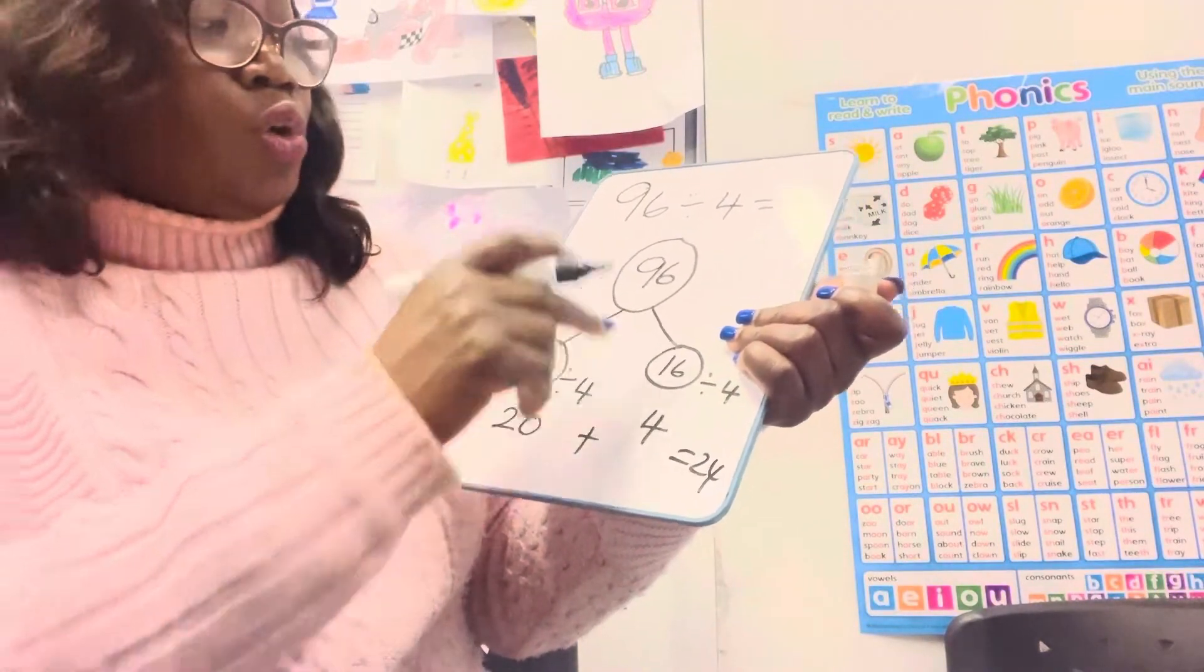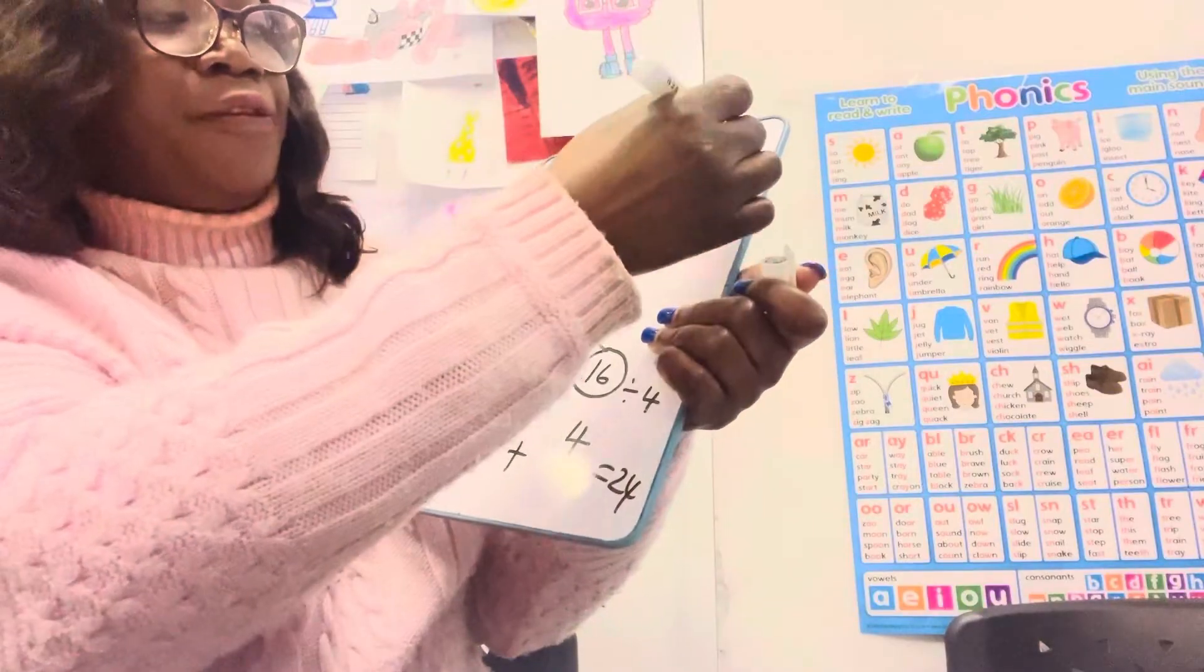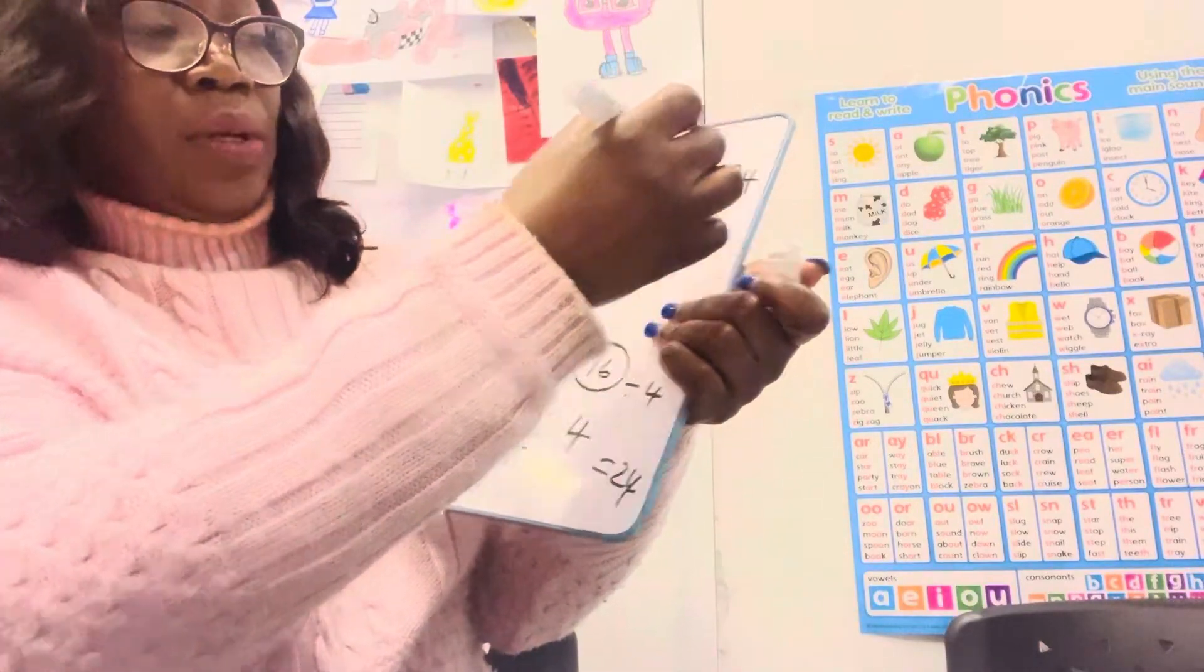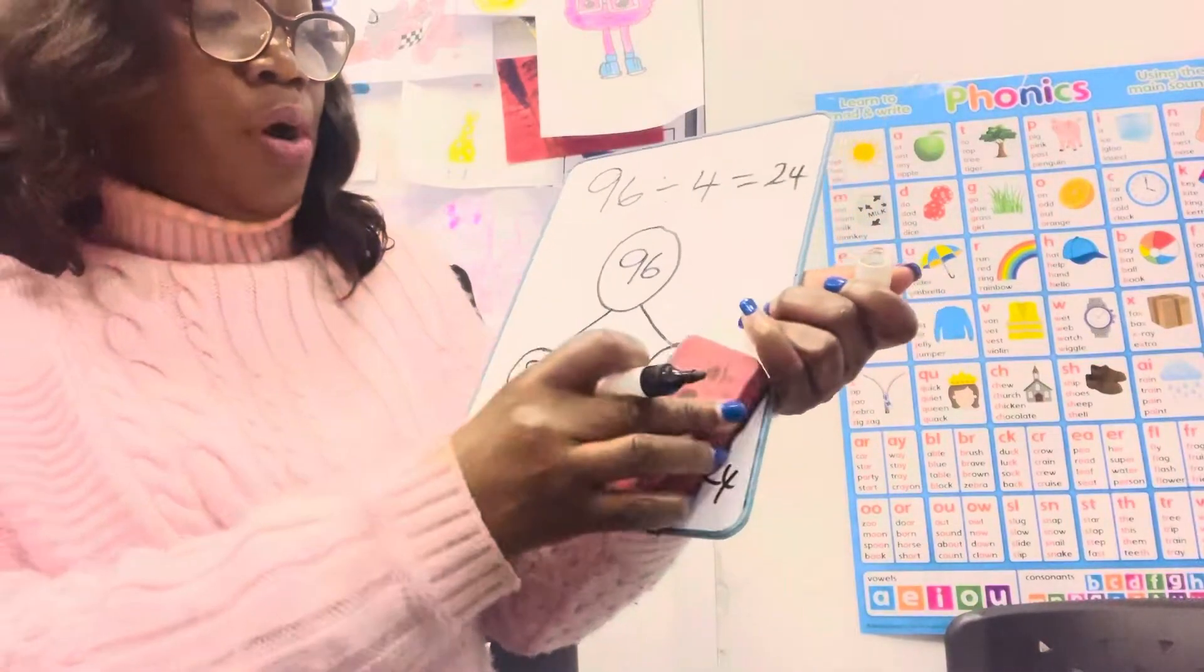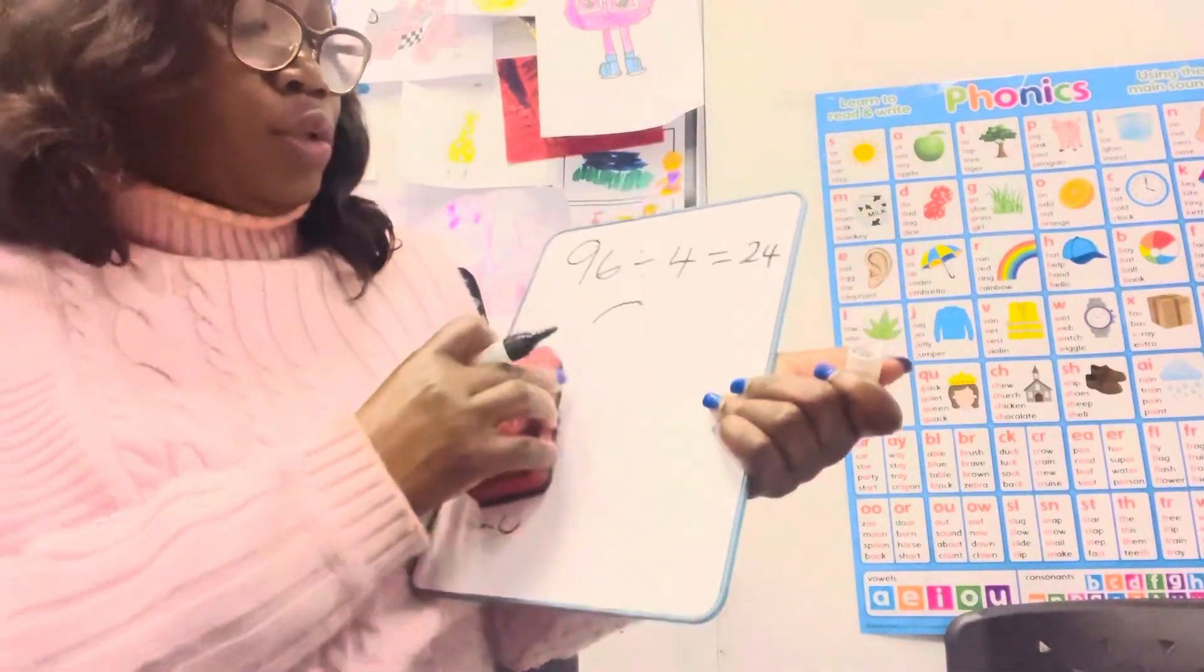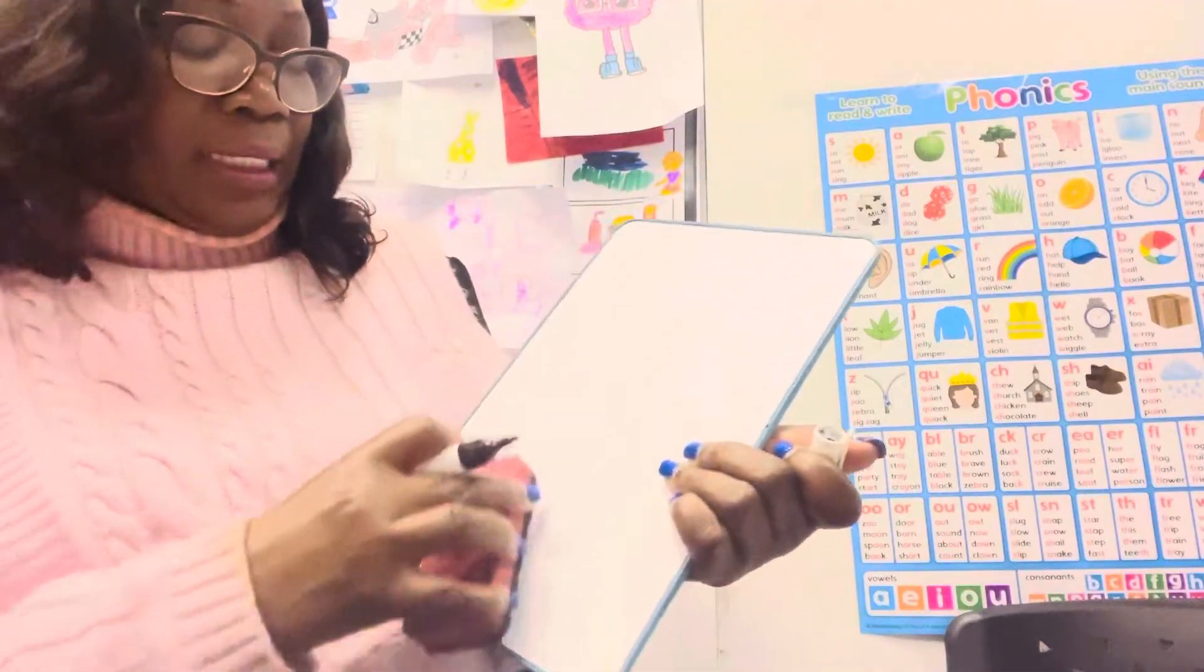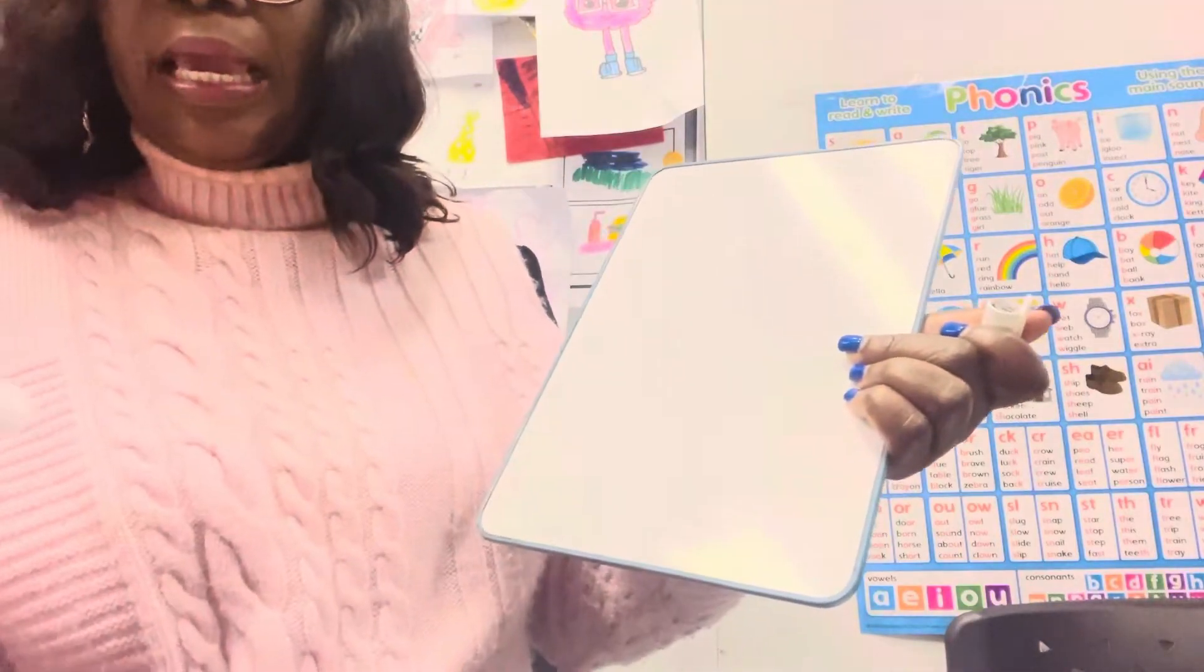So 96 divided by 4, the answer is 24. Okay, so I'm gonna quickly do another one now to show you how to do this. I'm gonna send a video to you guys so you can watch it again over and over again.